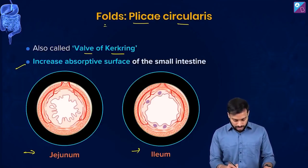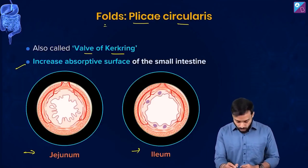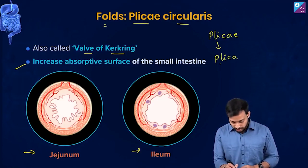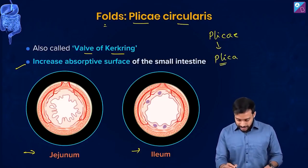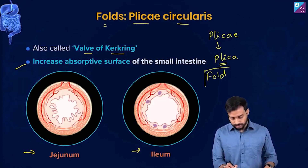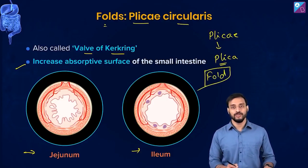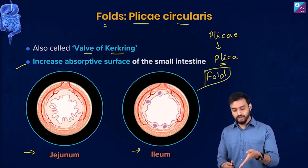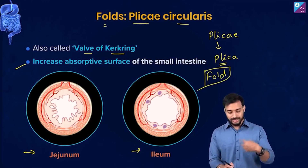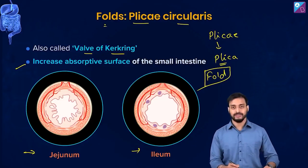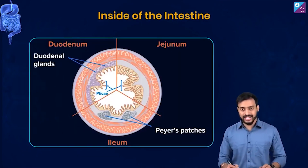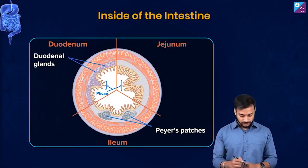The term plicae circulares has been derived from Latin and Greek. Because these are folded structures, the Latin word 'plicae' was used to name them. So plicae circulares refers to these circular folds inside the intestine.